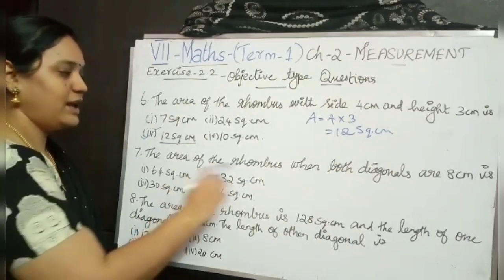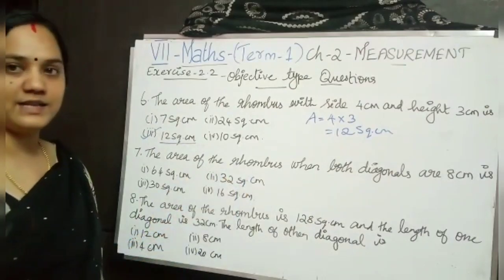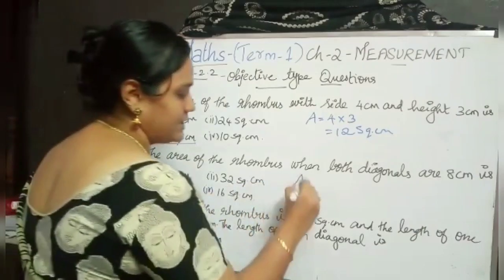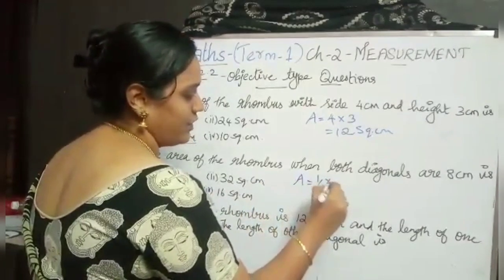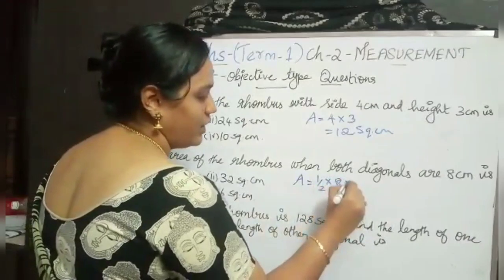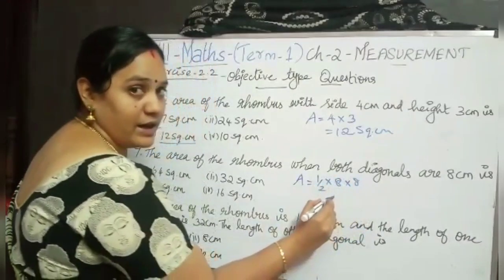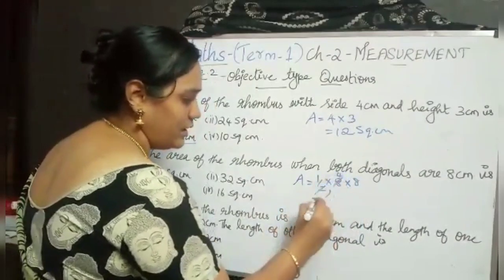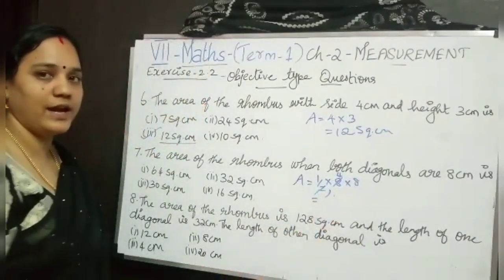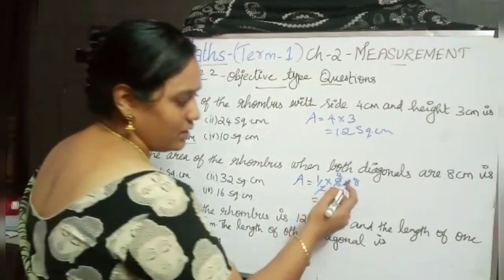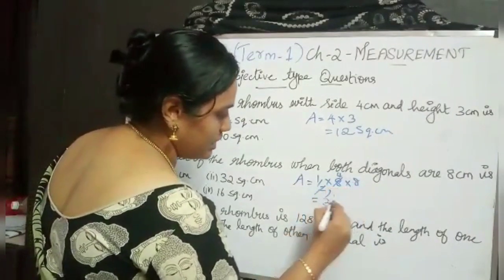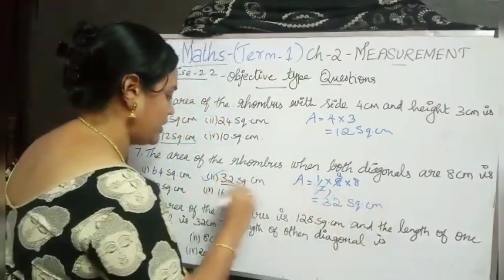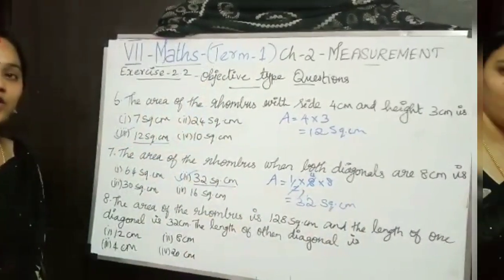Next: the area of the rhombus when both diagonals are 8 centimetre. So D1 is 8 cm and D2 is also 8 cm. Using the formula half into D1 into D2: 1 2s are 2, 4 2s are 8, so 4 into 8 equals 32 square centimetre. So 32 square centimetre is our answer — second option.